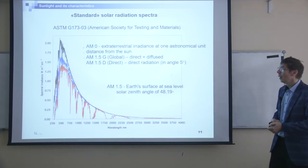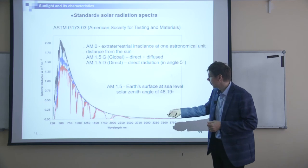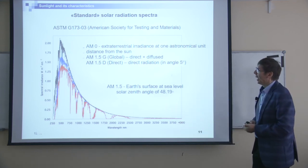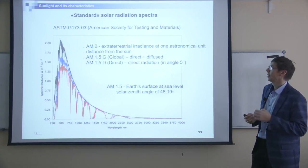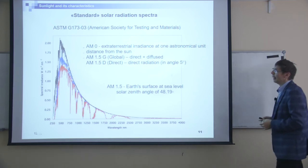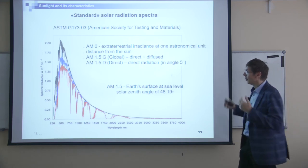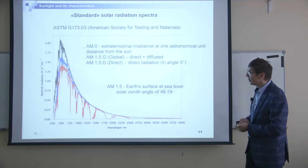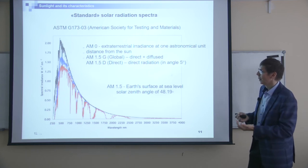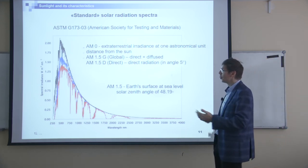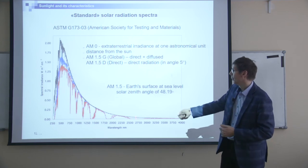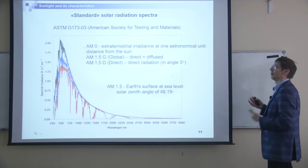You can see the difference between AM1.5G and AM1.5D — it's not only the intensity that differs but also the spectral distribution. For visible light there is a large difference in intensity, while for the infrared part the difference is not so important. So there are some differences in the spectrum. What does a standard spectrum mean? It means we have a table of values with a step that varies by range — for short wavelengths approximately 0.5 nm, above 400 nm it's 1 nm, and above 2 microns it's 2 nm. These are tabulated values.